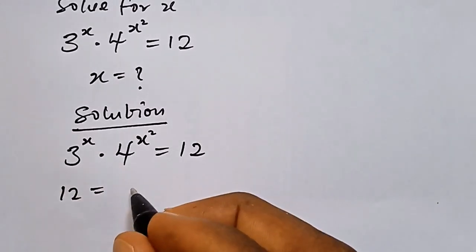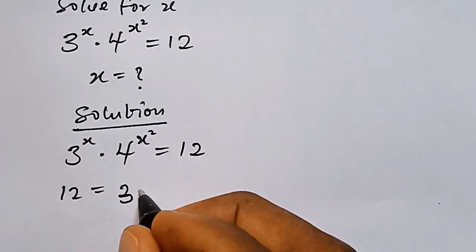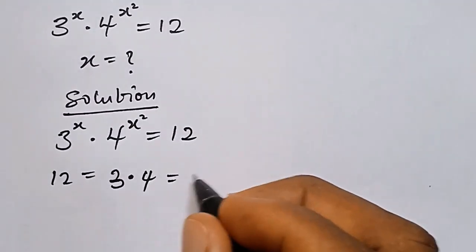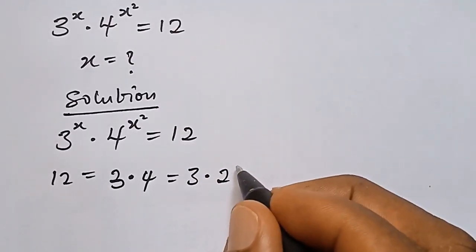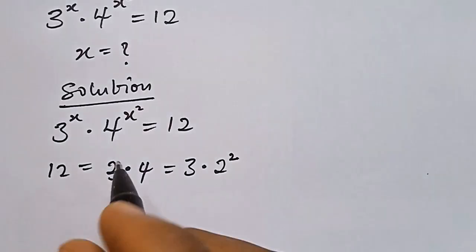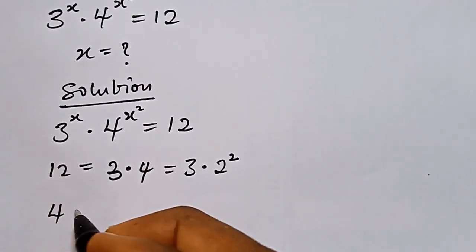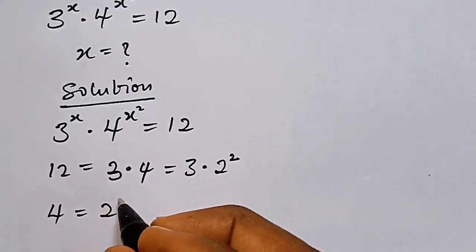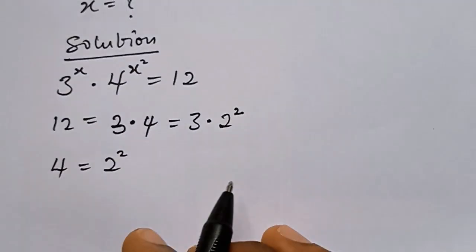We have 12 equals 3 times 4, and that can be written as 3 times 2 raised to power 2. Similarly, 4 can also be written as 2 raised to power 2.